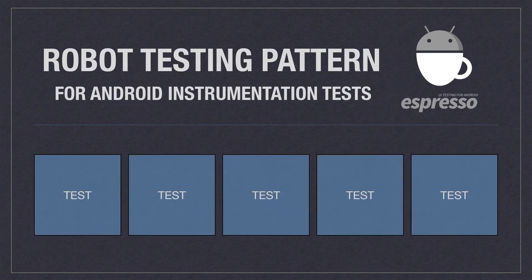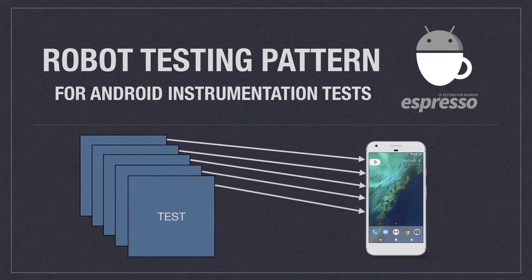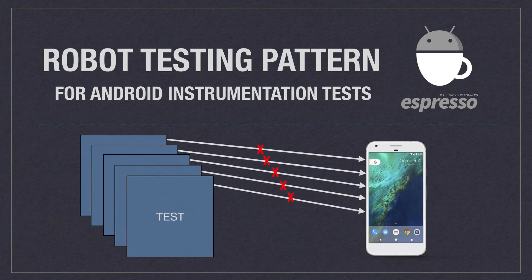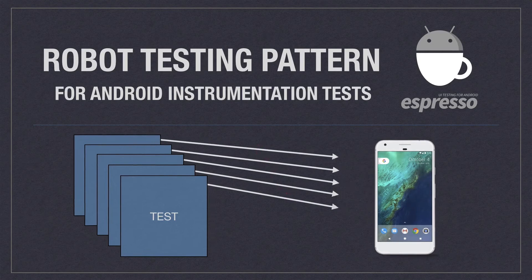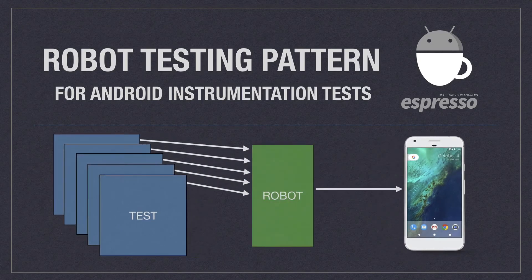Here we have a bunch of Espresso tests that we have written. Each test contains logic to interact with a specific screen on the Android device. The problem is that if one element on the screen changes, then all of our tests are now broken. If we introduce test robots, we can share the code that is used to interact with the screen, and when something changes in the UI, we only need to update the code in the robot itself, and not in every test.